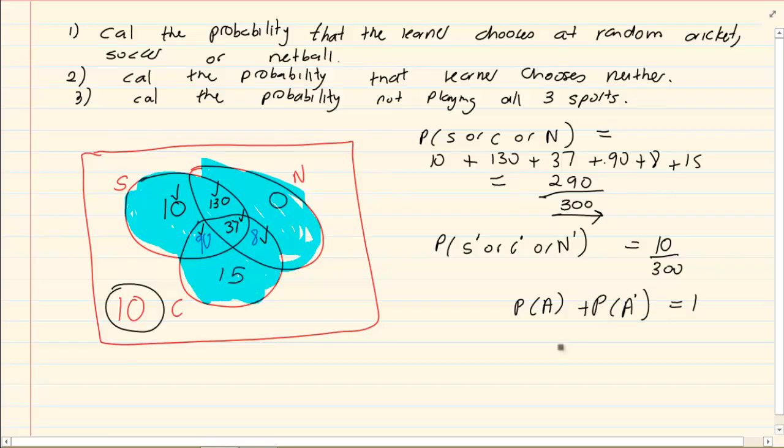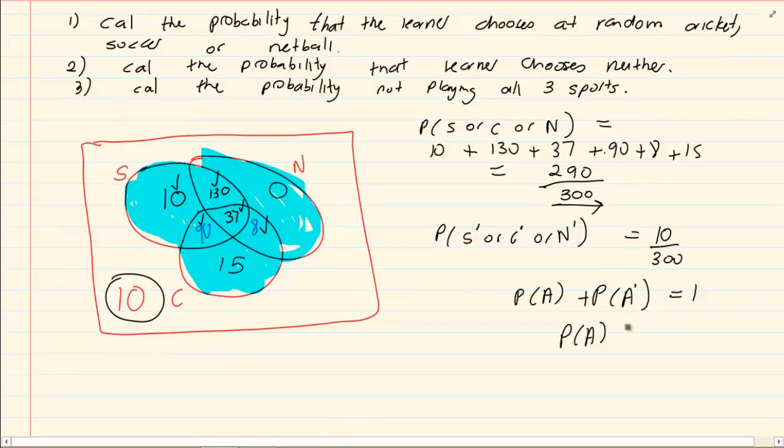Then I know the probability of what I want plus the probability of what I don't want is equal to 1. So if I wanted the probability of A, which is soccer, cricket or netball, I am going to say 1 minus 10 over 300 and look, we would end up with the same answer.